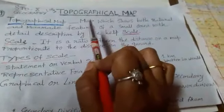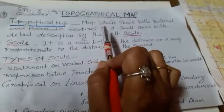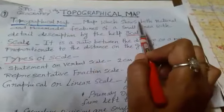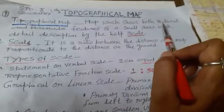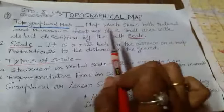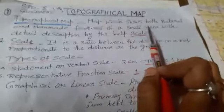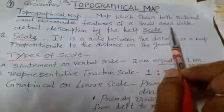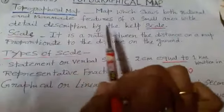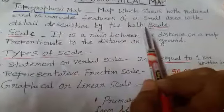What is a topographical map? A map which shows both natural and man-made features of a small area with detailed description by the help of scale. This is a survey map.